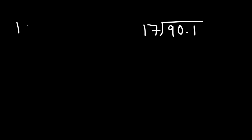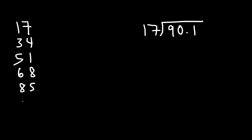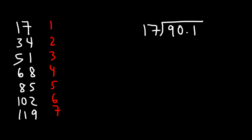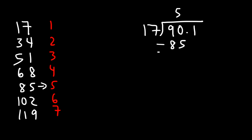Let's make a list: 17, 34, 51, 68, 85, 102, 119. How many times does 17 go into 90? The highest number just under 90 is 85, so 17 goes into 90 five times. 17 times 5 is 85, and 90 minus 85 is 5. Now let's bring down the 1.